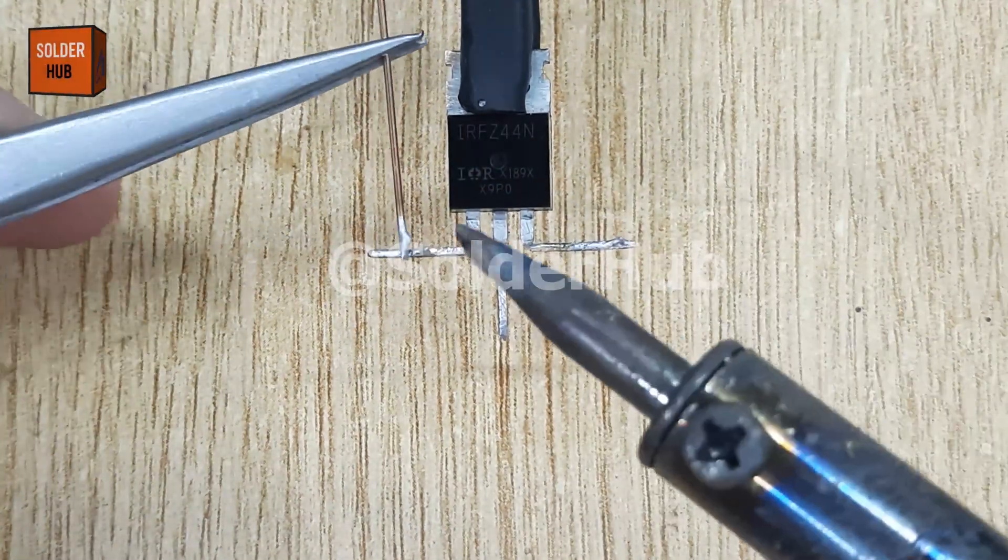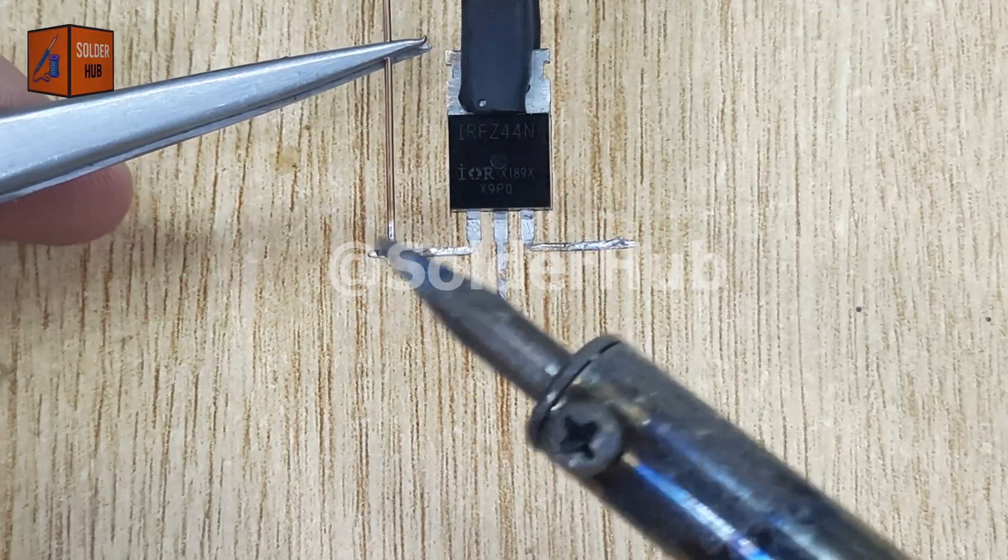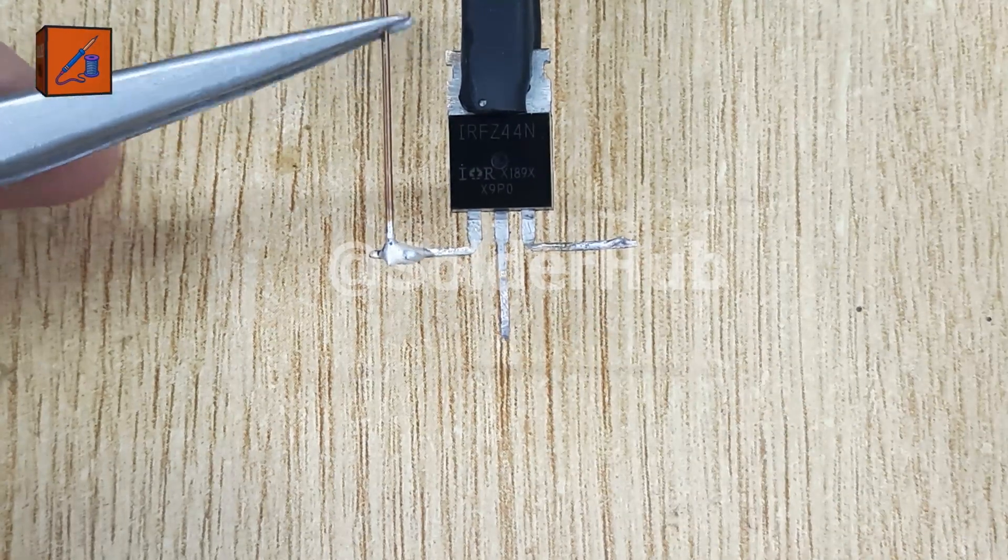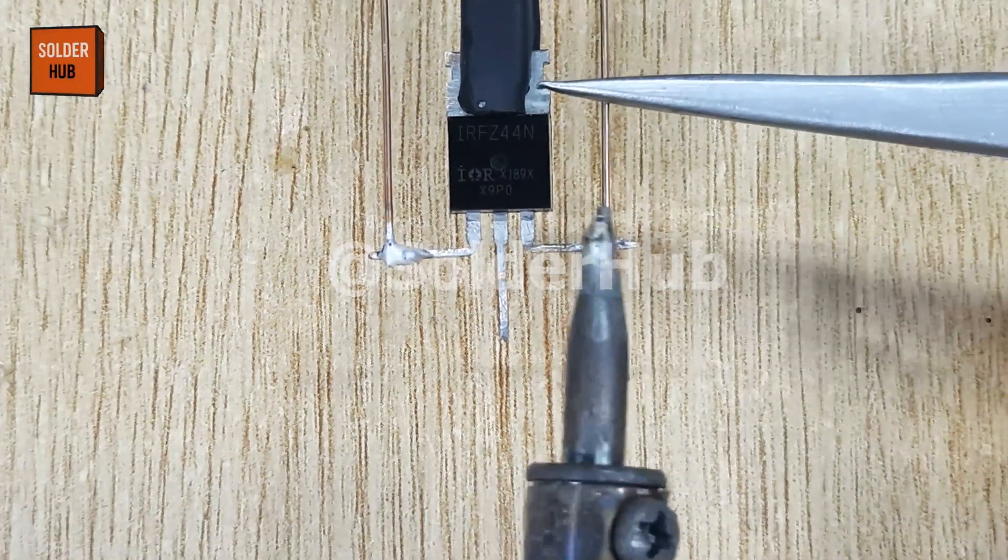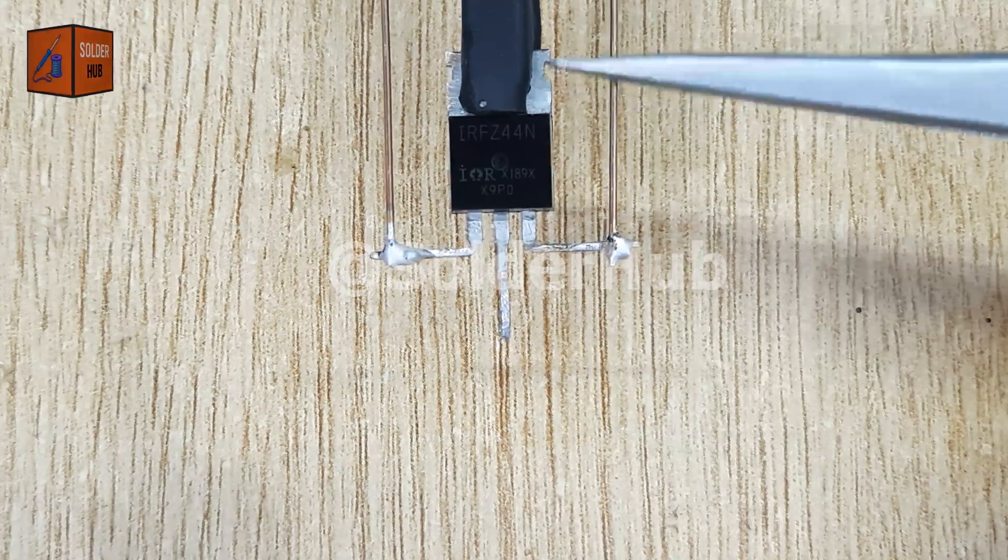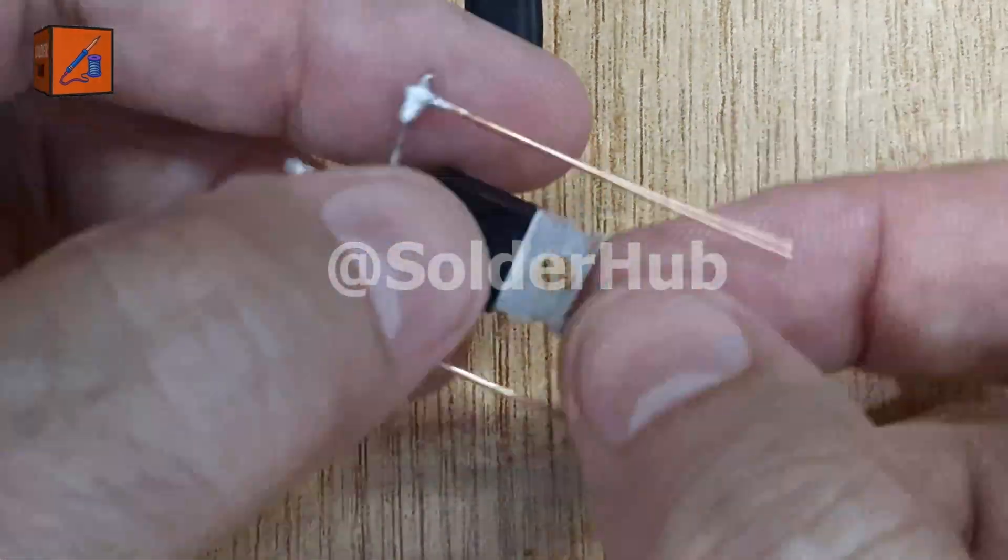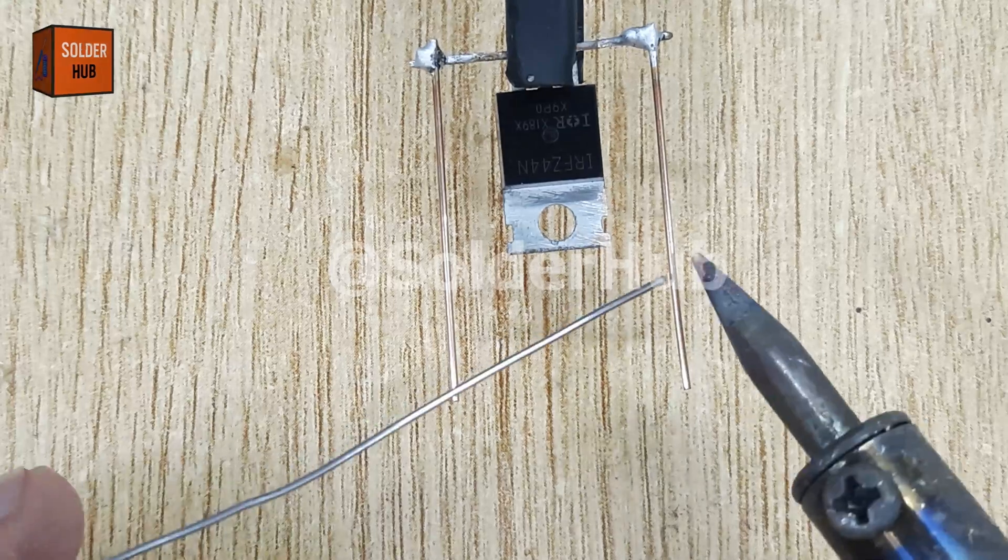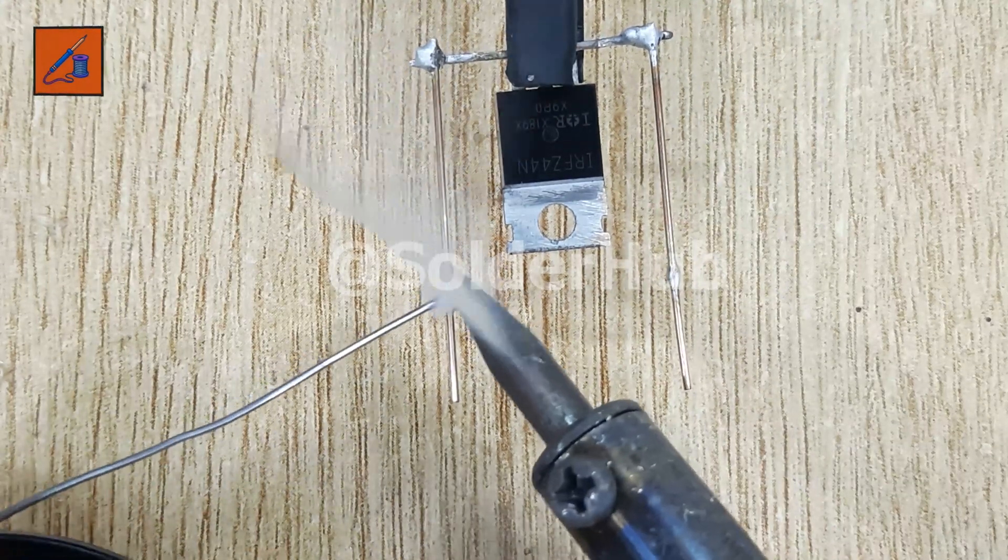Next, I prepare two short copper wires. Copper wires are used because of their excellent conductivity. I solder one wire to the gate pin of the MOSFET and the other to the source pin. This gives me a simple and clean way to connect the next components without stressing the MOSFET pins directly.